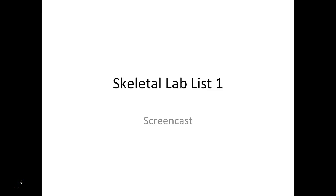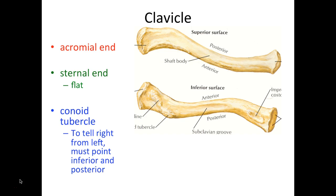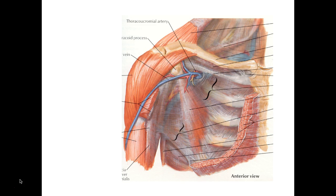Hello and welcome to your first skeletal lab list lecture. What we're going to do is go through the bones of our upper limb. Use that handout that I have posted on Blackboard and also handed to you in class to follow along. We are going to start describing the pectoral girdle.